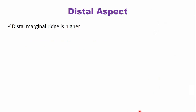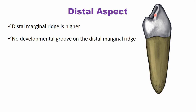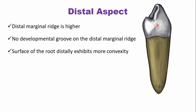From the distal aspect, the distal marginal ridge is relatively higher compared to the mesial marginal ridge. The distal marginal ridge is smooth, with no developmental depression like the one present on the mesial surface. The root surface exhibits more convexity compared to the mesial surface, where there is a very shallow depression on the root surface.